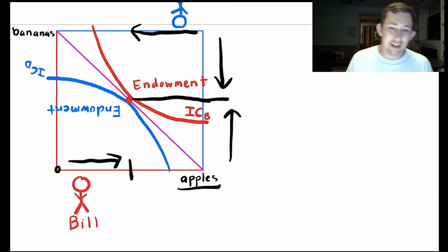Notice that right here, this is where Bill has no apples and no bananas. This is the point at which Dave has zero apples and zero bananas, which means Bill must have all the apples and all the bananas here. If Bill has no apples and no bananas,